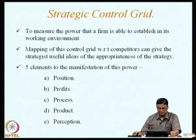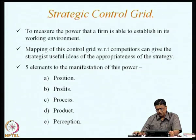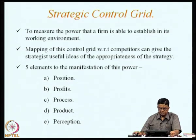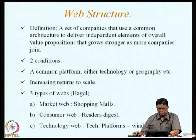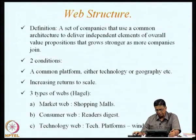We also looked at what is the strategic control grid — it can help measure the power that a firm is able to establish in its working environment. Mapping the control grid with respect to competitors can give the strategist useful ideas of the appropriateness of the strategy. Five elements for this manifestation of power are: position, profits, process, product, and perception. We also looked at what is meant by this web structure and when it can be brought into play — the types of webs namely the market web, the consumer web, and the technology web.